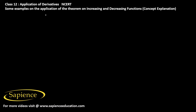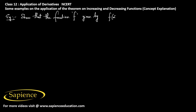Here we shall give some examples on the applications of the theorems on increasing and decreasing functions. The first example: show that the function f given by f(x) = x³ - 3x² + 4x, where x belongs to ℝ, is increasing on all real numbers ℝ.